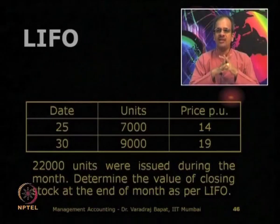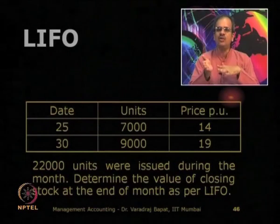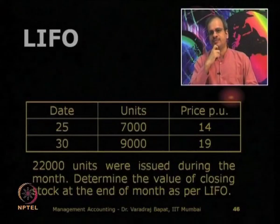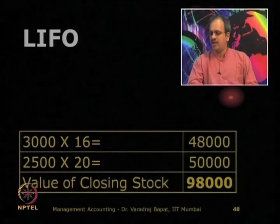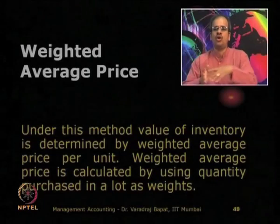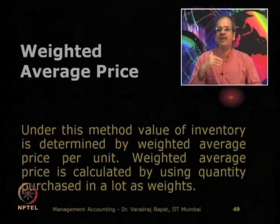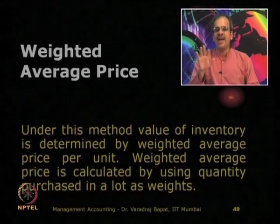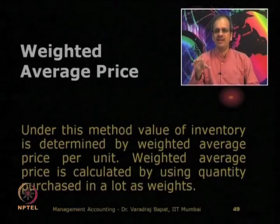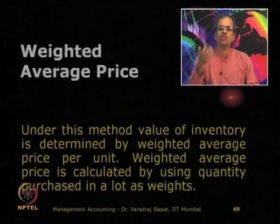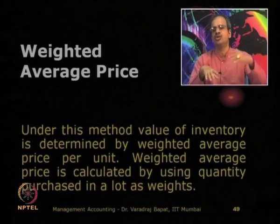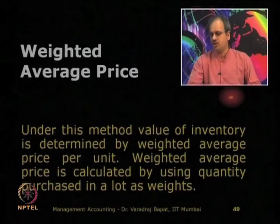Whereas under the FIFO method, since the current goods are in hand, they are close to current market prices. There is also another method known as weighted average. Instead of only taking the latest stock or very old stock, in the weighted average method the weighted average price is calculated. The quantity purchased is used as a weight — quantity into price — to determine the weighted average price, and then at that price the goods are issued and the same price is used for valuing the stock.